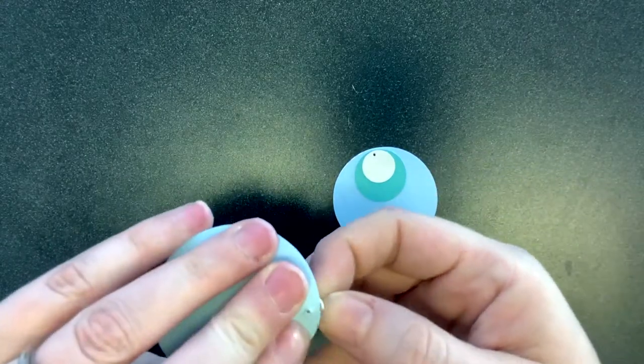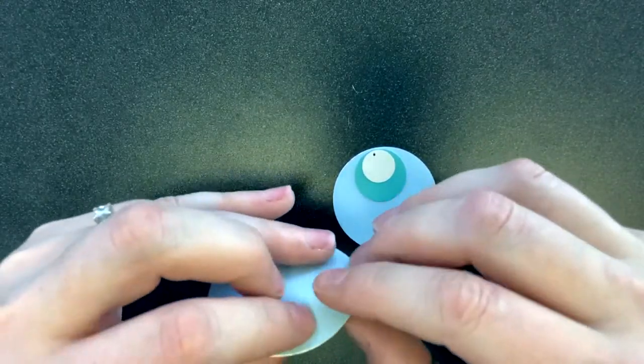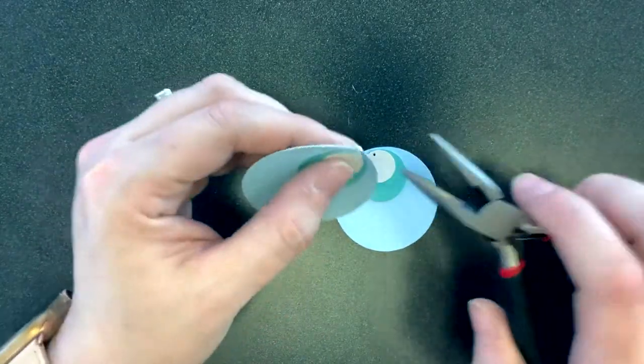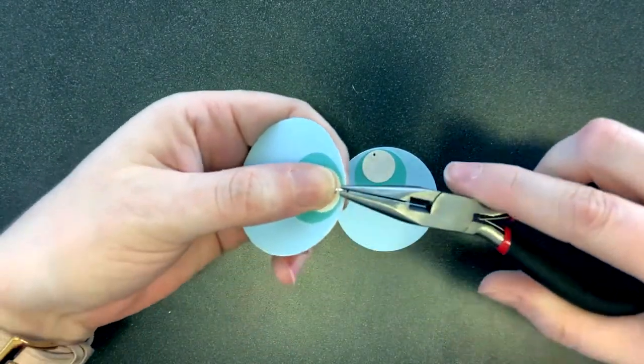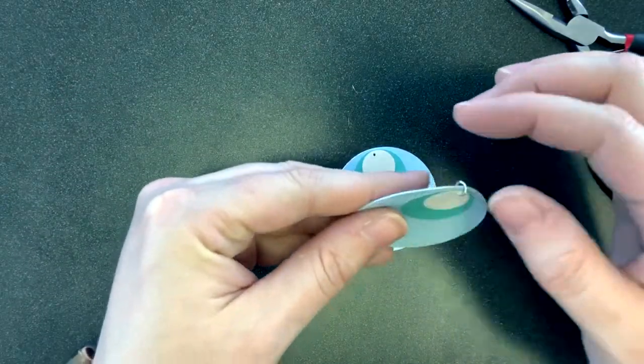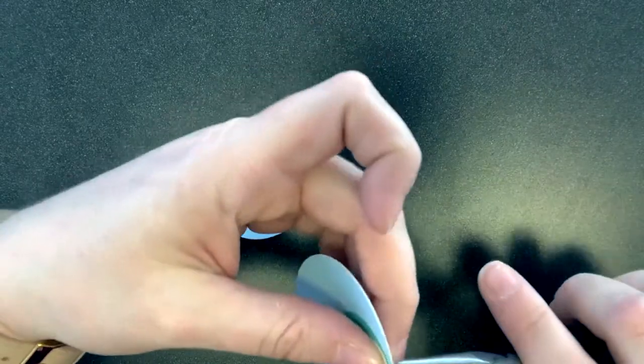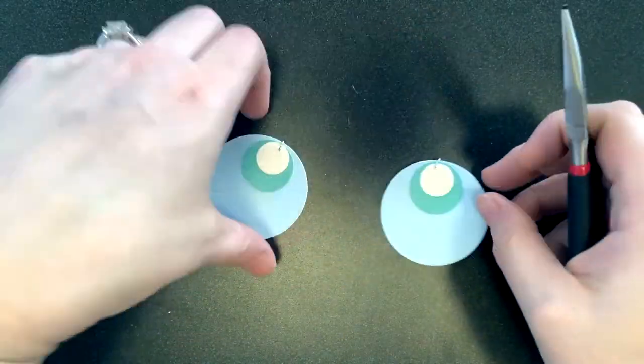Open a jump ring and attach it to your first earring. Use the pliers to close the jump ring. Repeat this for the second earring.